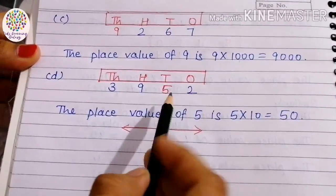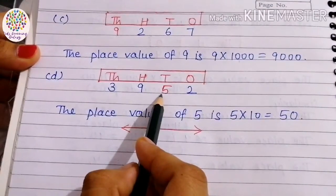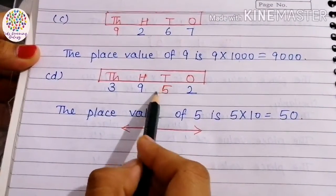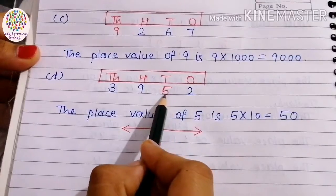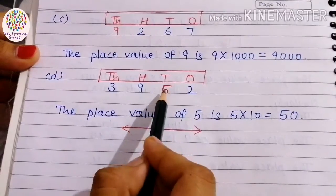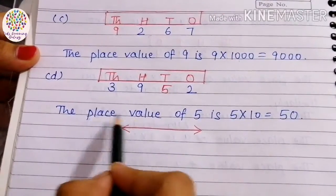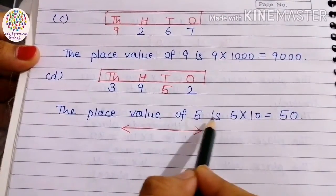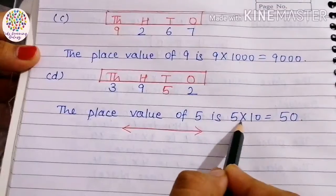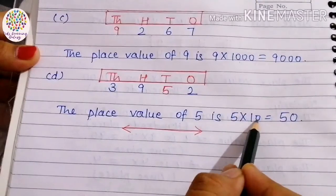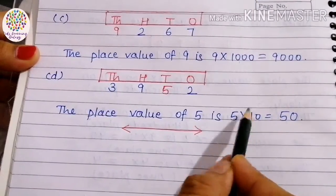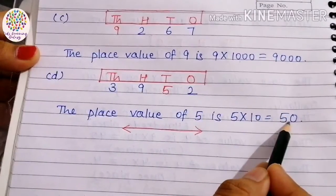The last part is 3952. The red color digit 5 is written under tens place, so the place value of 5 is 5 × 10 = 50.